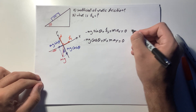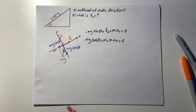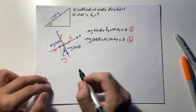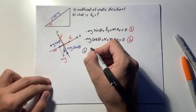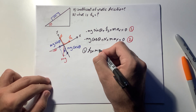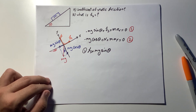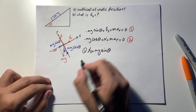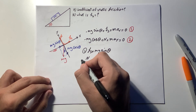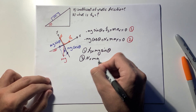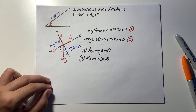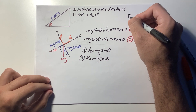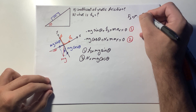Calling these equation one and equation two: from equation one, fs equals mg sine of theta. From equation two, the normal force N equals mg cosine of theta. By definition, the force of friction equals mu times the normal force.